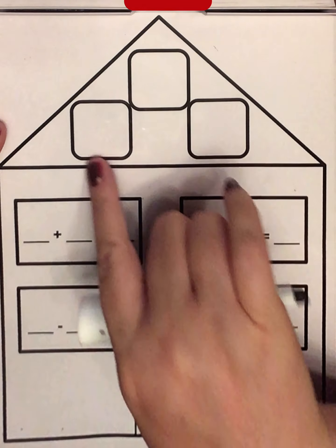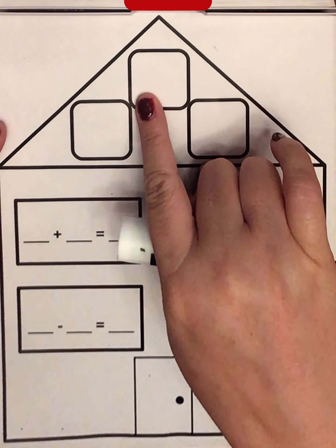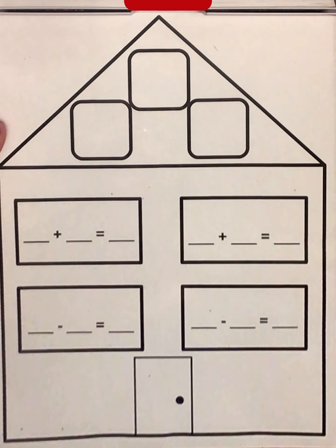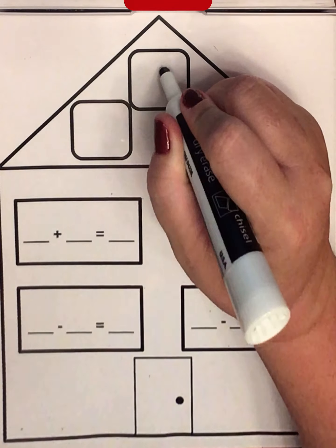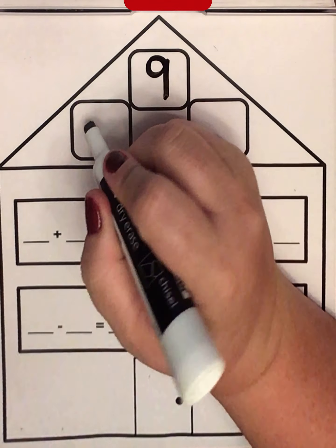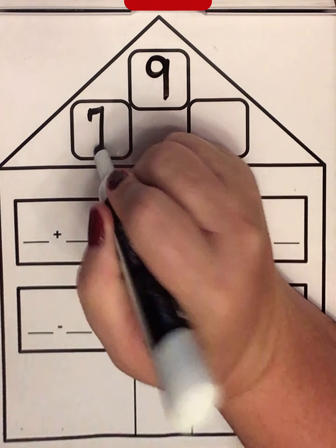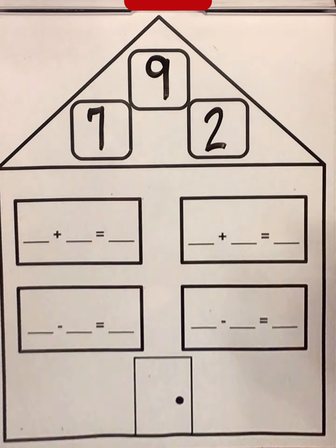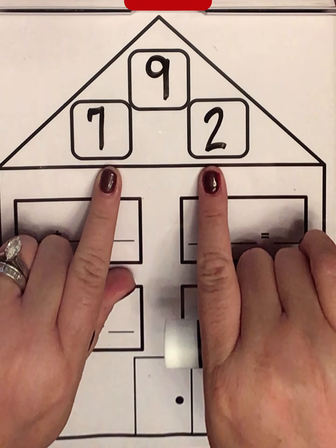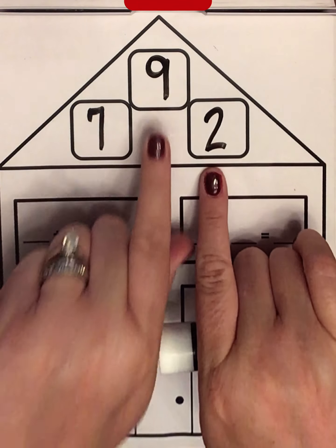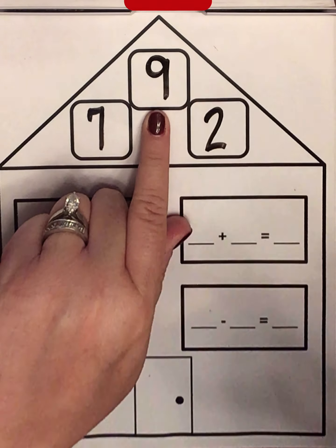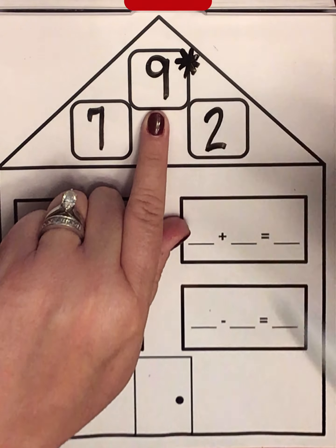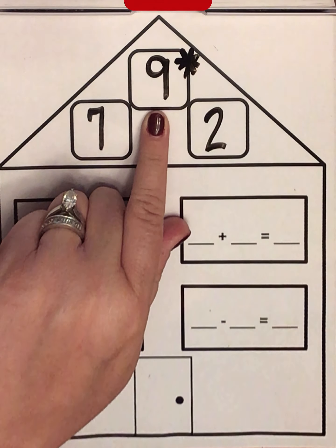There are two smaller numbers and one larger number. For this fact family house, I am going to do 9, 7, and 2. You can see that these two bottom numbers are much smaller than our top number. Our top number is always going to be our biggest number.